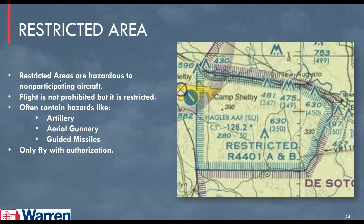Restricted areas are hazardous to non-participating aircraft. For example, Camp Shelby — you may be able to get permission to operate there when nothing is going on. But think about it: if they're doing artillery, aerial gunnery, or guided missiles, and you're flying a drone there, that would not be a good day for anyone. You can only fly in a restricted area with authorization, and depending on the area, you may or may not be able to get that. You can often identify restricted areas by their pronounced boundaries and the letter R followed by a number.